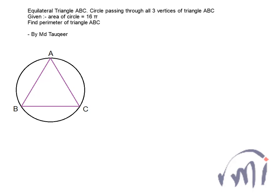In this video we are going to solve a problem sent by Mr. Muhammad Takir. The problem statement is: we have an equilateral triangle ABC with a circle passing through all three vertices — that means the circle is a circumcircle. Given that the area of the circle is 16π, we have to find the perimeter of triangle ABC. If we can find each side, we can find the perimeter. We are going to approach this problem in two different ways, so I would advise you to watch this video till the end.